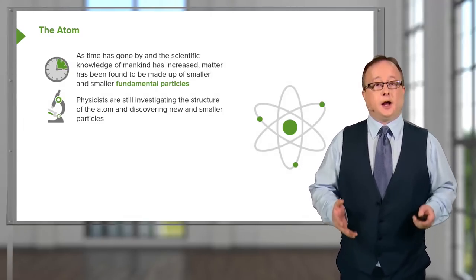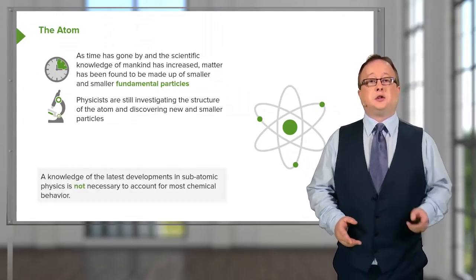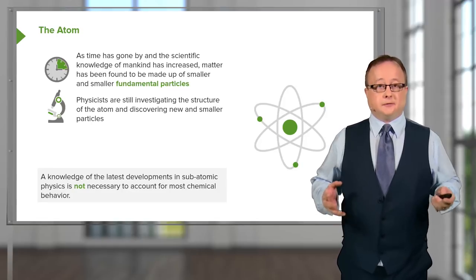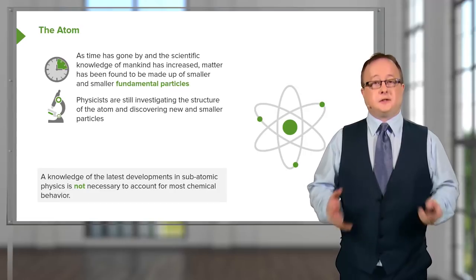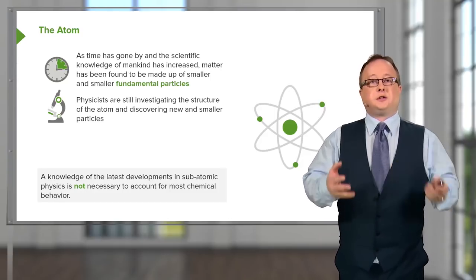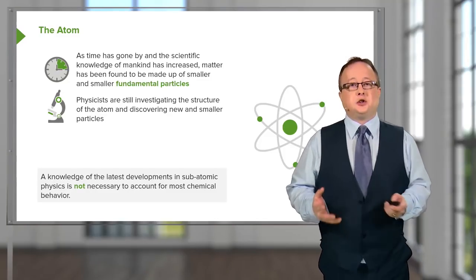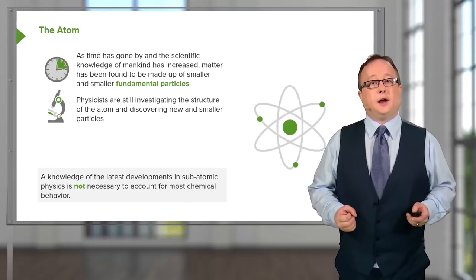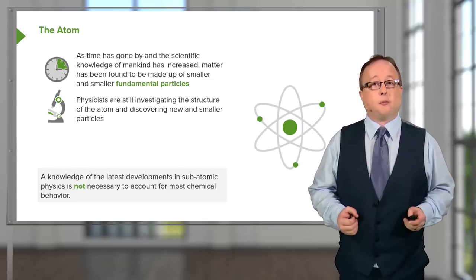When discussing chemistry, we are principally looking at the movements and interactions of electrons. Anything which goes beneath that in terms of size we leave in the realms of physics. Chemistry is about the movement of electrons; nuclear physics is about how nuclear particles interact with each other. Therefore a knowledge of the latest developments in the discovery of these fundamental particles isn't necessarily essential for an appreciation of how electrons move around and how ionic, covalent molecules and formula units can be formed.